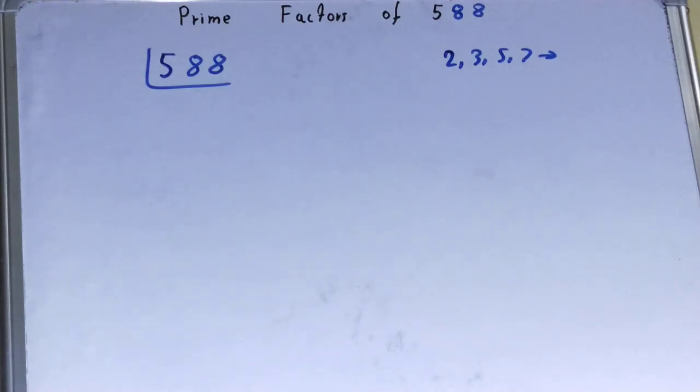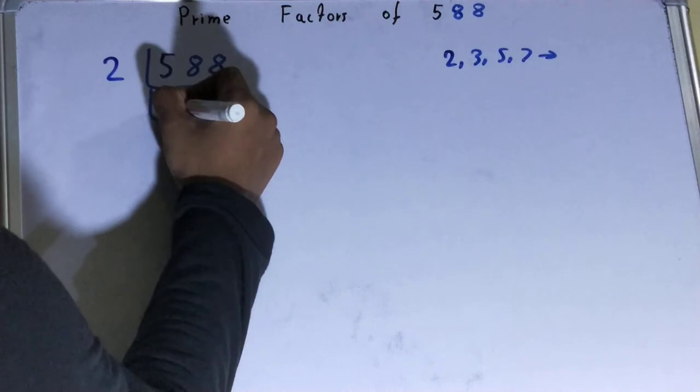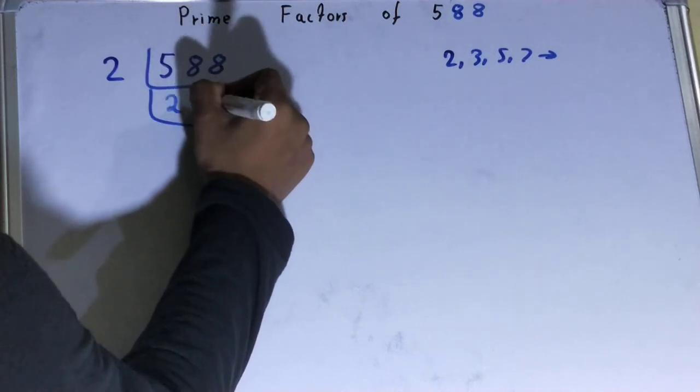So we'll be starting with the lowest prime number we have, that is 2. Is the number 588 divisible by 2? Yes it is, because 588 is an even number. So divide it and you'll be left with 294. Right.